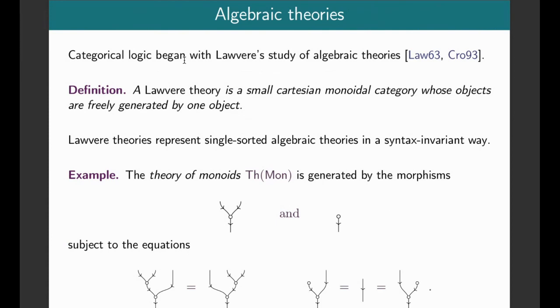I'm going to begin with algebraic theories, which is appropriate because that's where categorical logic began, with Lawvere's study of algebraic theories. A Lawvere theory is a certain kind of category, in this case a Cartesian category, whose objects are freely generated by one distinguished object. And that last condition is to essentially make this represent a single sorted algebraic theory.